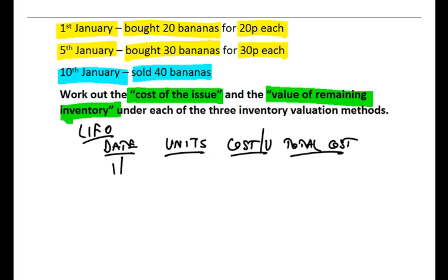Well, first transaction, 1st of January, we've got a purchase or a receipt of 20 bananas. They're 20 pence each, 20 pence being £0.2, so 20 times 0.2. Well, if you pay 20 pence each for 20 bananas, that's a total cost of £4 you've just spent. So the value of that first transaction is £4.